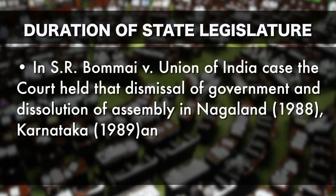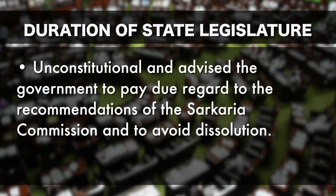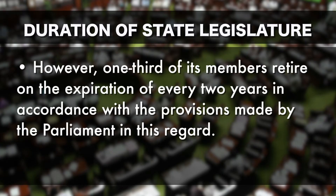The power of the Governor to dissolve the State Legislative Assembly before completion of its normal term has sometimes been misused. In the S.R. Bommai versus Union of India case, the Supreme Court held that the dismissal of government and dissolution of assembly in Nagaland in 1988, Karnataka in 1989, and Meghalaya in 1991 was unconstitutional, and advised the government to pay due regard to the recommendations of the Sarkaria Commission to avoid dissolution. The State Legislative Council is a permanent body and cannot be dissolved; however, one-third of its members retire after completing their six-year term every two years.